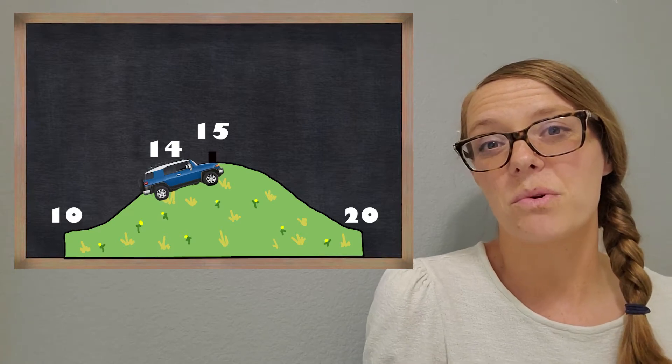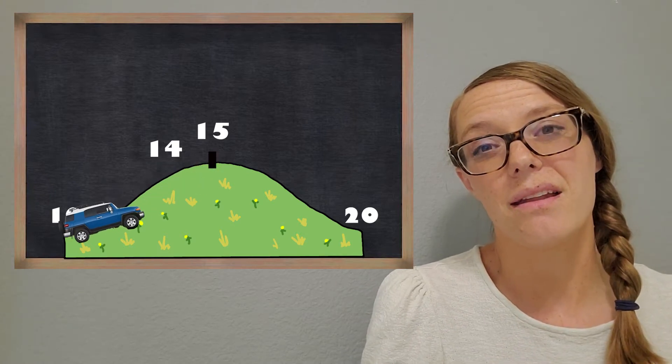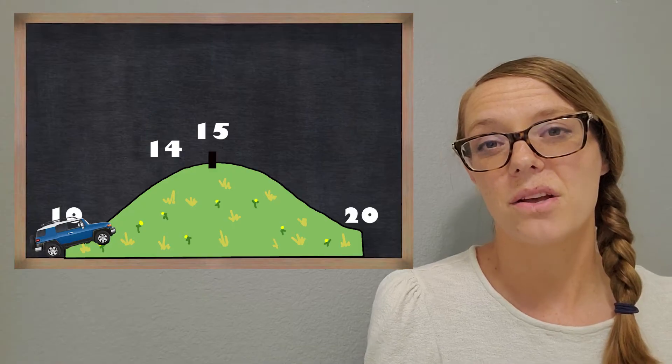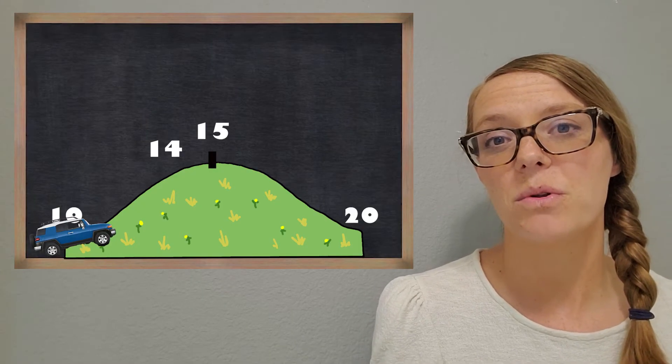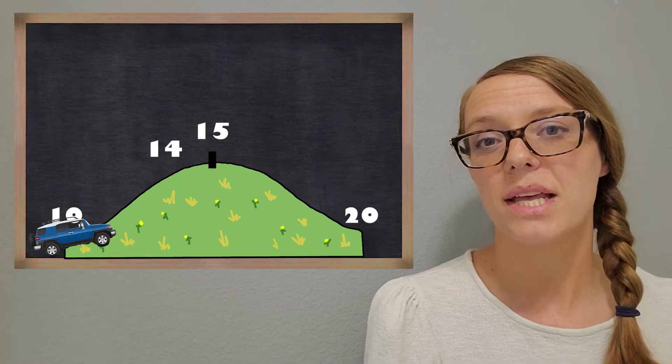If we ran out of gas, we would roll back to 10, and that's going to go along with some of our rounding that we do. So 14 would round down to 10.